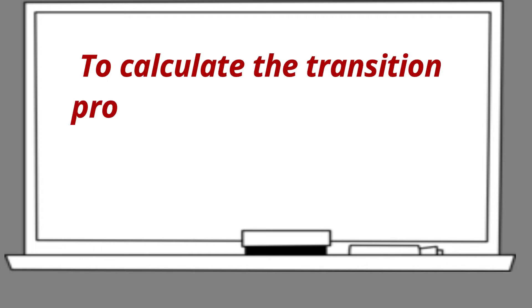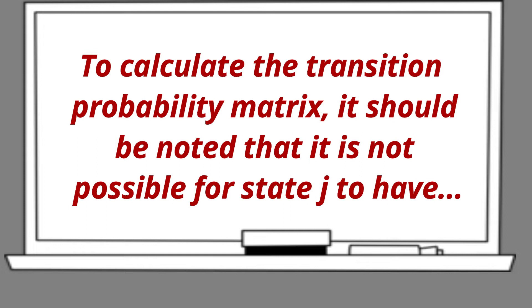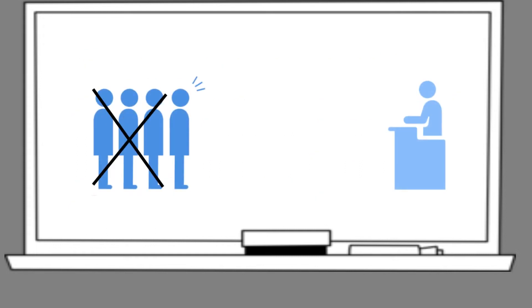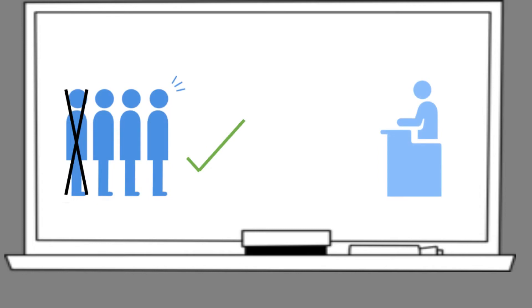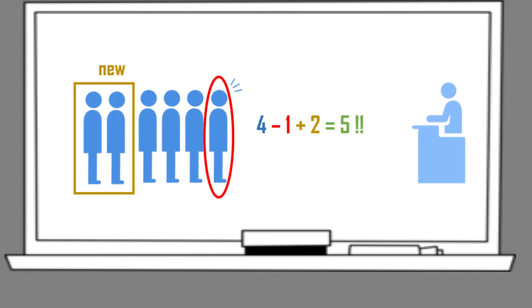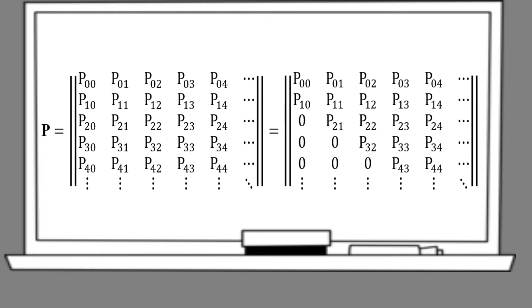To calculate the transition probability matrix, it should be noted that it is not possible for state j to have 2 less customers, 3 less customers, or 4 or 5 less from state i, because during each period only 1 customer is served. Thus, it is only possible to have 1 less customer. Or, if the number of new customers is more than 1, then state j will have more customers than state i. So, the probability that state j has 2 less or 3 less customers from state i equals 0. Hence, we can obtain the transitional probability matrix.